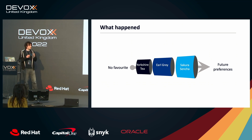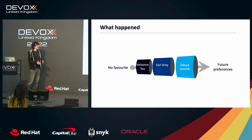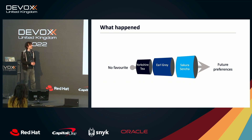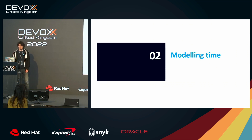Back in the day she liked Yorkshire tea the best, for most of the time I've known her she liked Earl Grey, but now she's moved on and likes Sakura Sencha instead. We clearly need to model not just the current state but also any previous states, because otherwise we'd lose information. We could just update the graph, but losing information isn't great, so we need to think about how to model time.